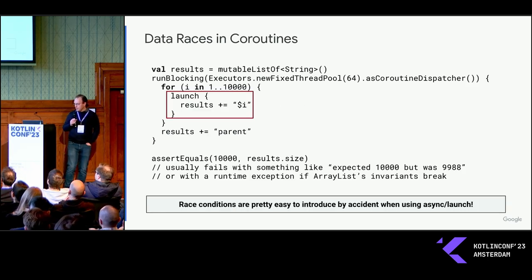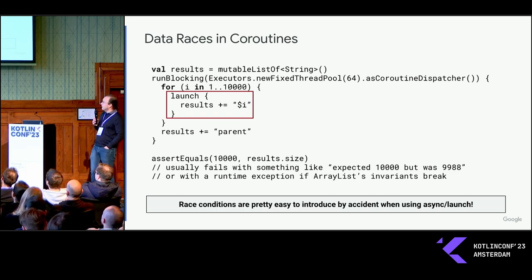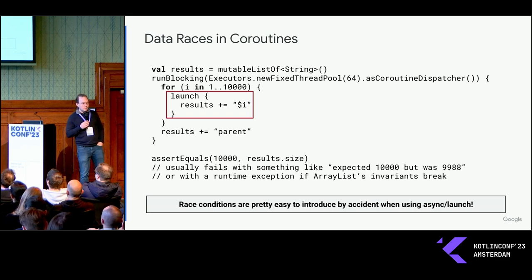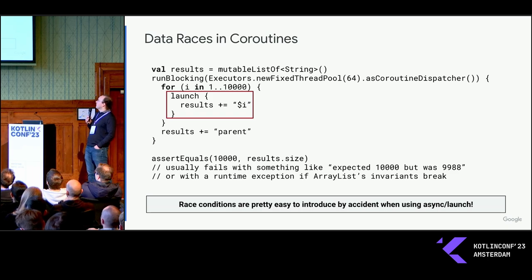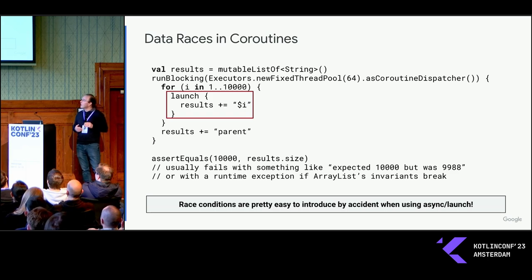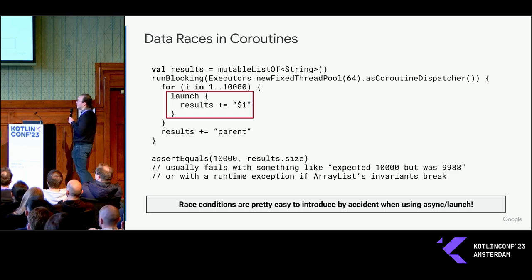So, data races. It's actually pretty easy. Here's an example of a list that gets modified by child coroutines. This piece of code fires off 10,000 coroutines, and each of them tries to add an element into the list. You can kind of see that that's a race. When you run this code, most of the time it fails with something like, we were expecting 10,001 elements, but we only got 9988 or something. So you can see that some updates basically get lost because of this race. Sometimes if you run it, you get an exception of some kind because the internal invariants in the ArrayList were violated by the race.